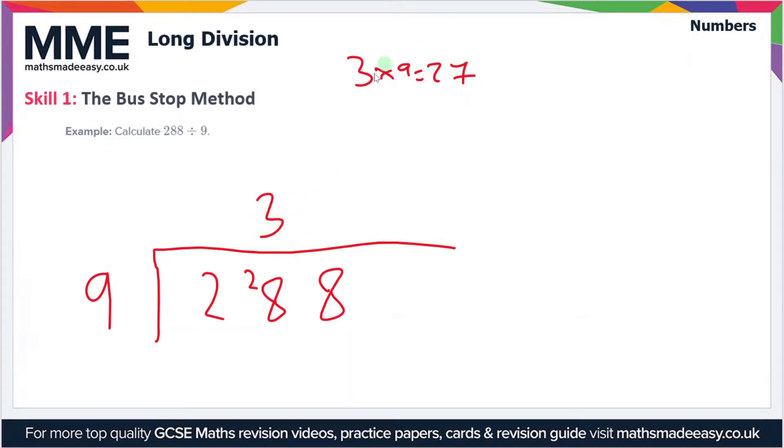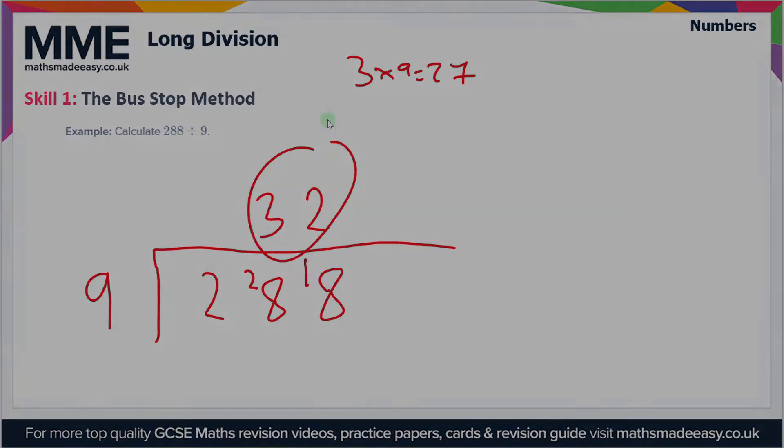So that leaves us with 3 on the top and we have a remainder of 1 because 28 minus 27 is 1. And that remainder we put in the next number so we make the 8 into an 18. And then we have how many times does 9 go into 18. The answer is 2. 2 times 9 is 18, so our final answer therefore is 32. So 288 divided by 9 is 32.